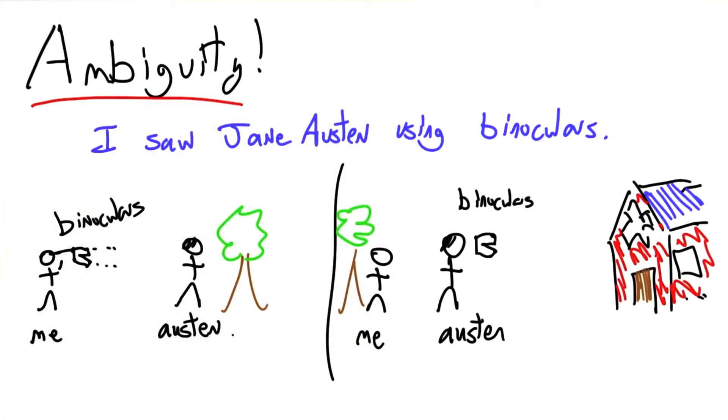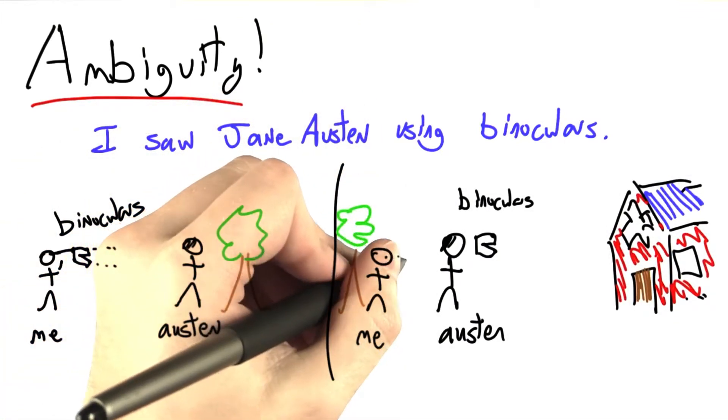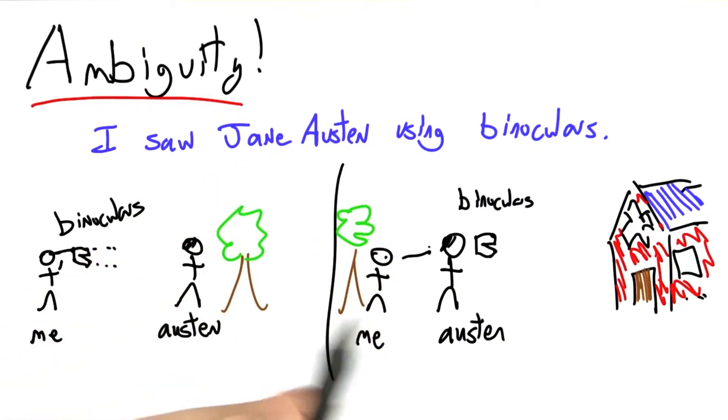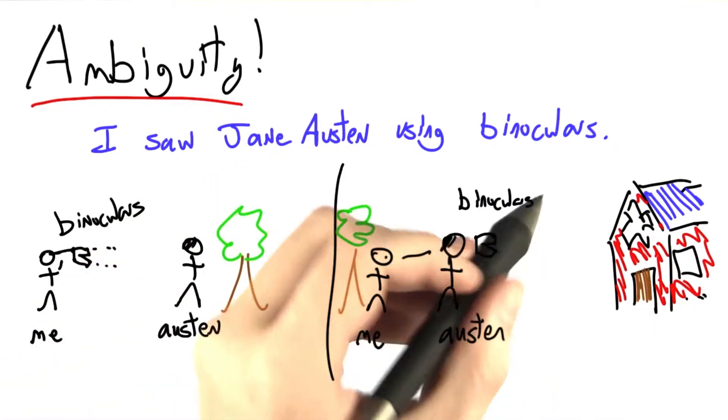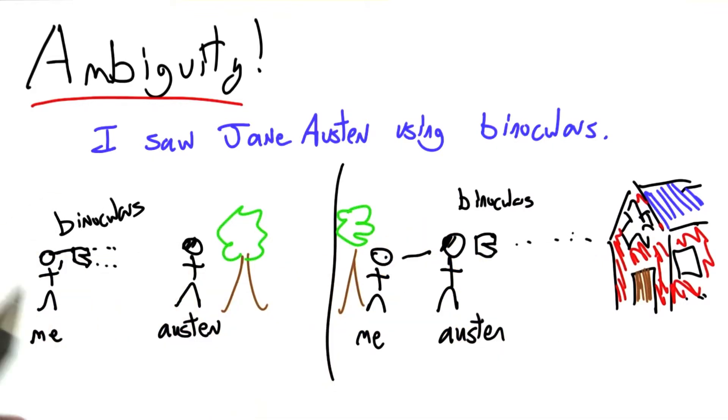Here in this alternative interpretation, I see with my naked eye, Jane Austen, she's using binoculars to look at something else. Maybe she's spying on an abbey over here.